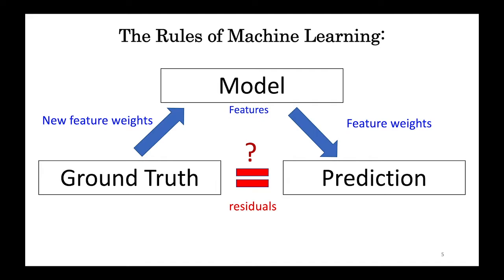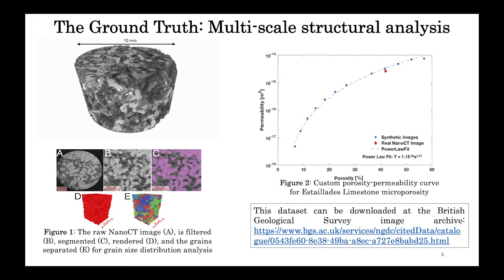So in order to turn this dream into reality, we needed a ground truth imaging dataset for a carbonate that had both experimentally measured permeability and numerically solved permeability for both the full core and the microporosity. Quite a big ask.